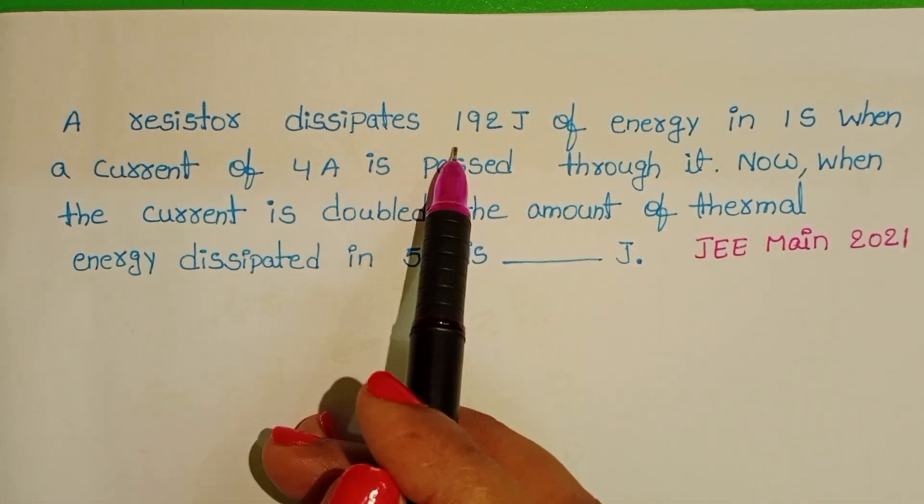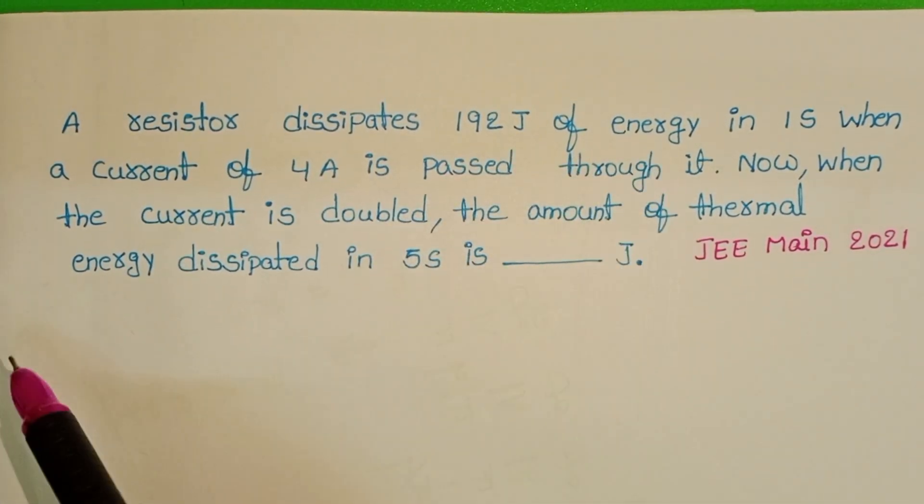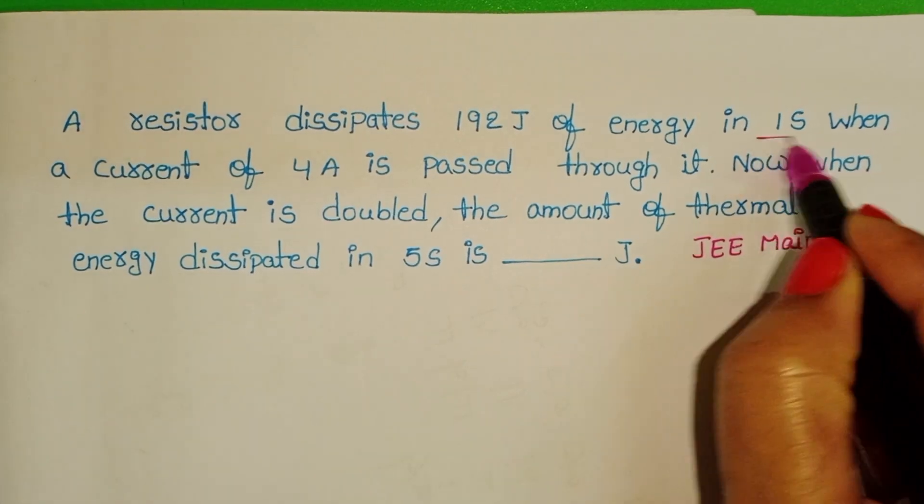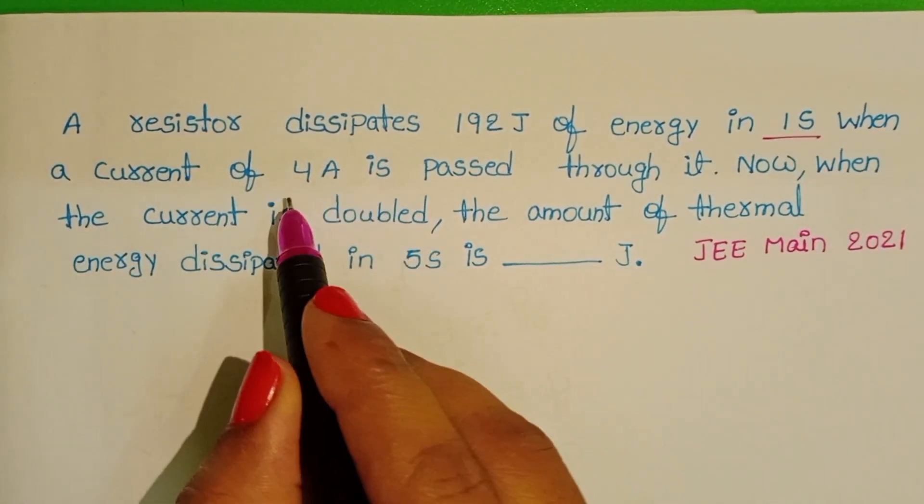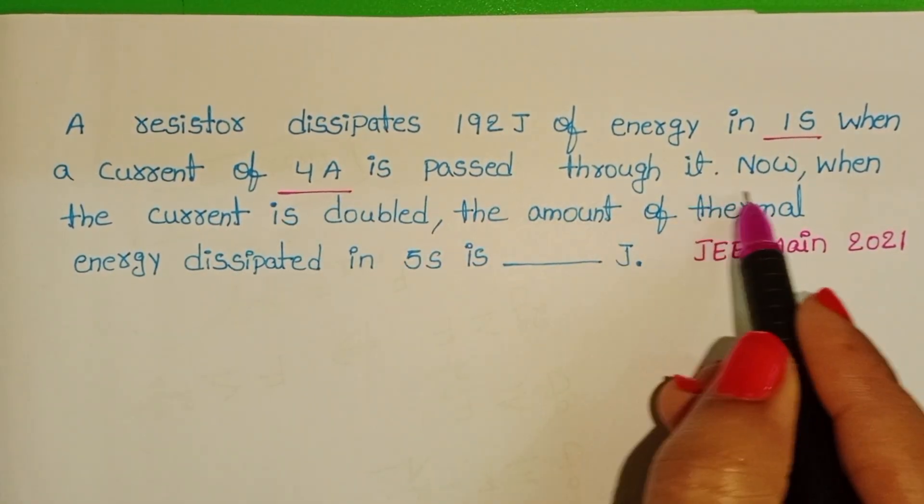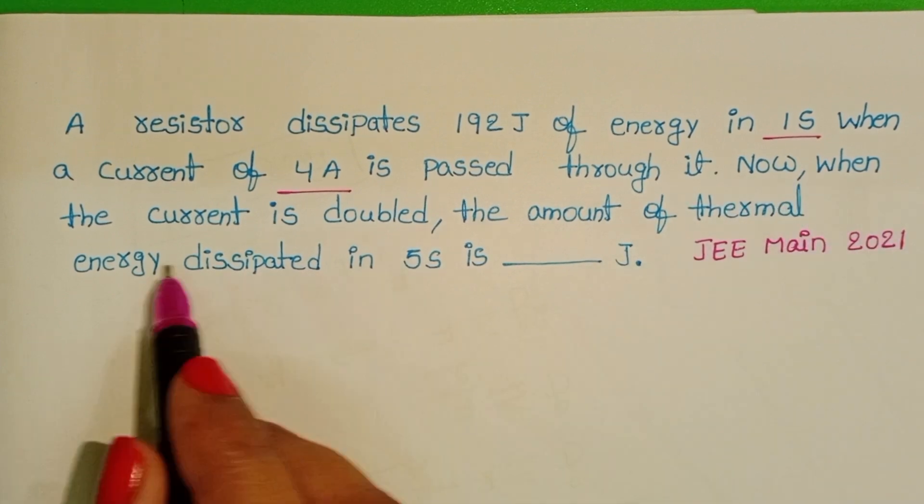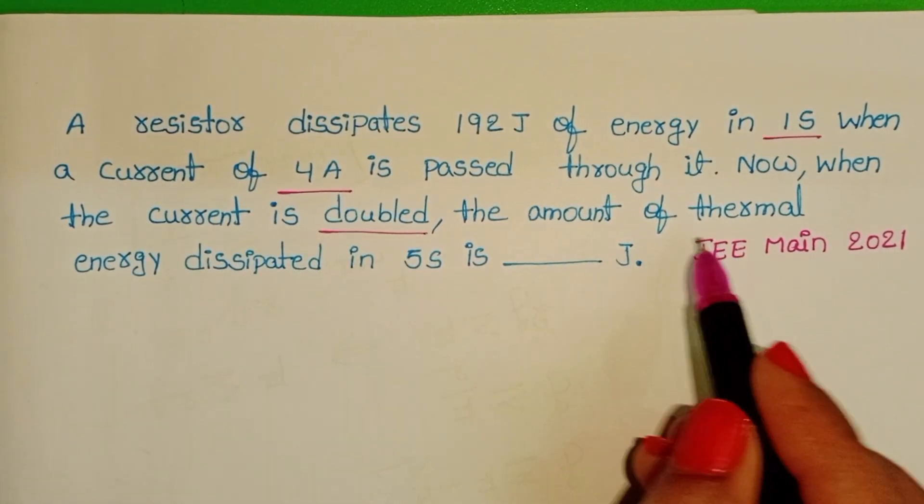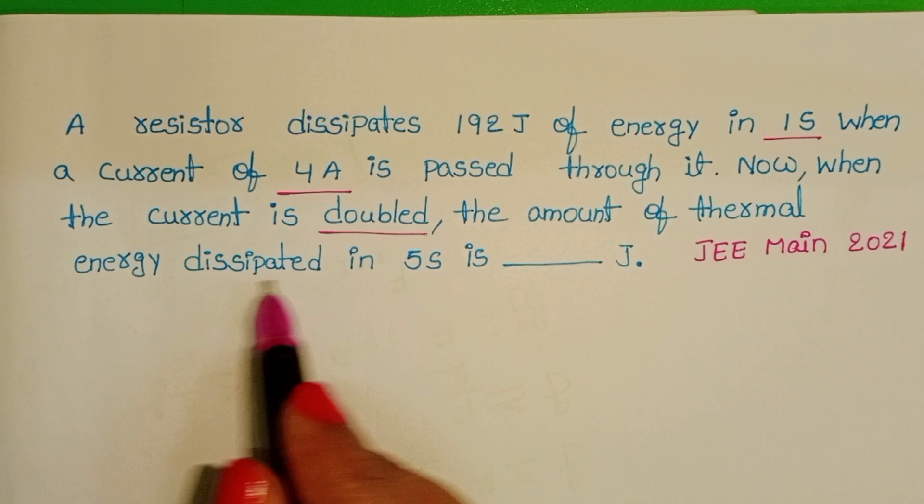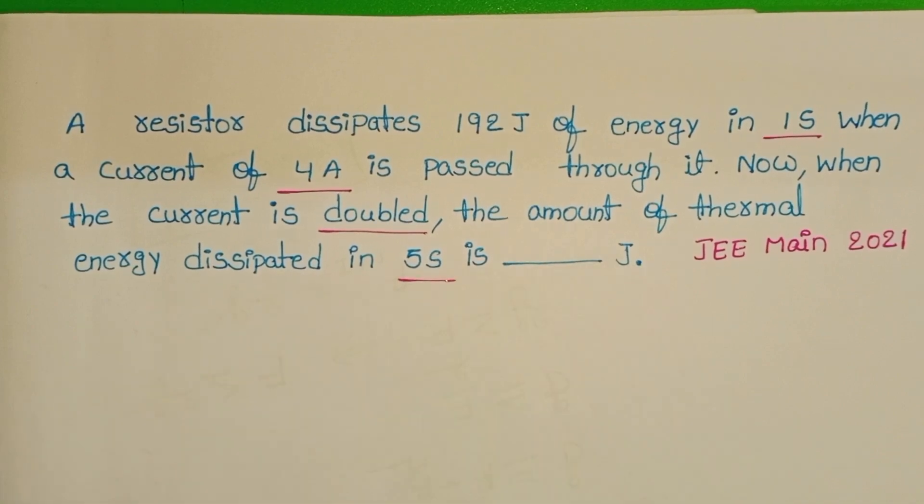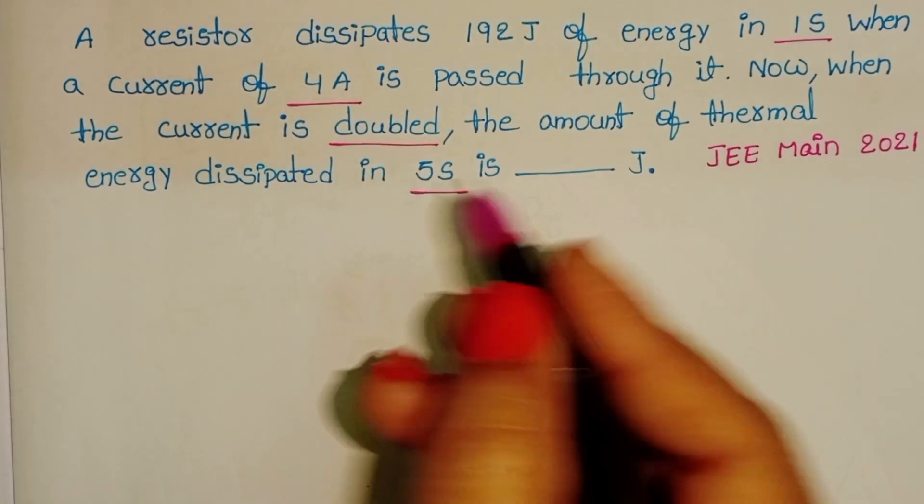A resistor dissipates 192 joules of energy in 1 second when a current of 4 amperes is passed through it. Now, when the current is doubled, the amount of thermal energy dissipated in 5 seconds is?